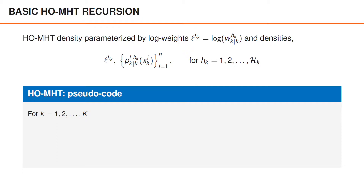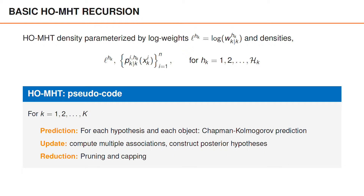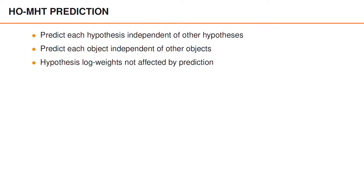Hypothesis-oriented MHT has three main parts. For each time step, we start with a Chapman-Kolmogorov prediction. Then we have the update, where we compute multiple associations for each predicted hypothesis and construct the posterior hypotheses. And the last step is the reduction, where we do pruning and capping. When we have a density with multiple hypotheses, we can predict each hypothesis independent of the other hypotheses, and in each hypothesis, we can predict each object independent of the other objects.